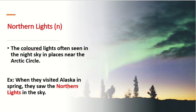The next vocabulary is Northern Lights. It's a noun. Northern Lights are the colored lights often seen in the night sky in places near the Arctic Circle. When you talk about the Northern Lights, these are colored lights you can see especially at night. Example: When they visited Alaska in spring, they saw the Northern Lights in the sky.